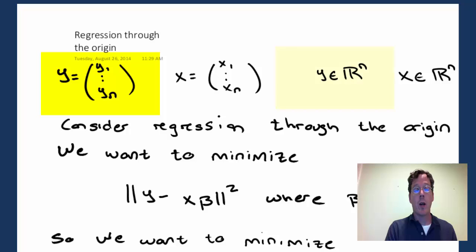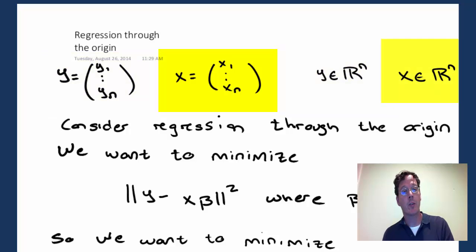Remember, y is y1 to yn, a vector in Rn, and so let's assume x is now x1 to xn, another vector in Rn, and the points are coordinated. So y1 corresponds to x1, yn corresponds to xn, and all the other points in between.